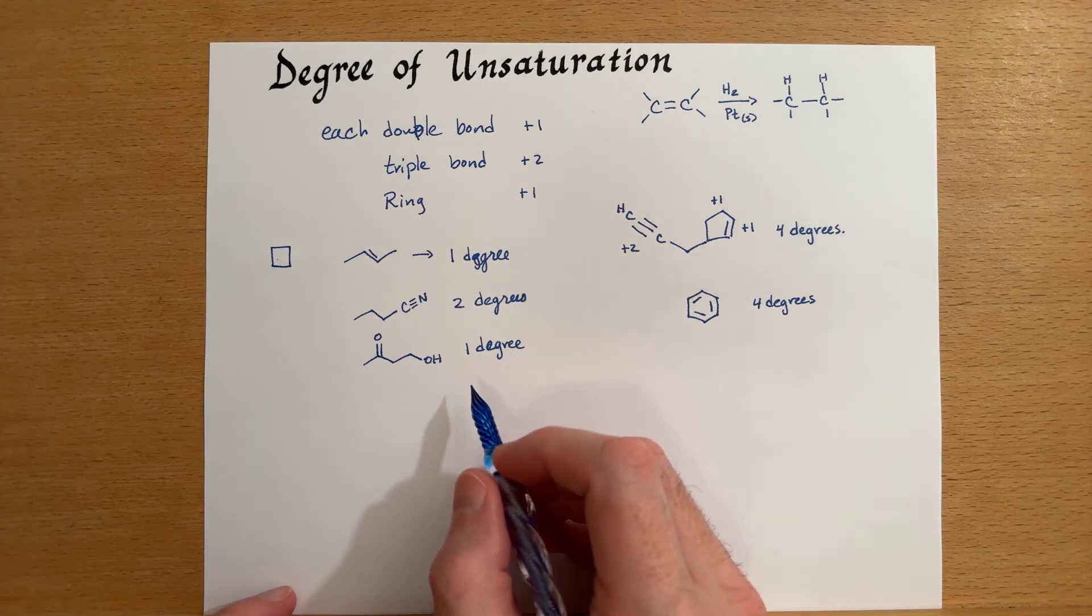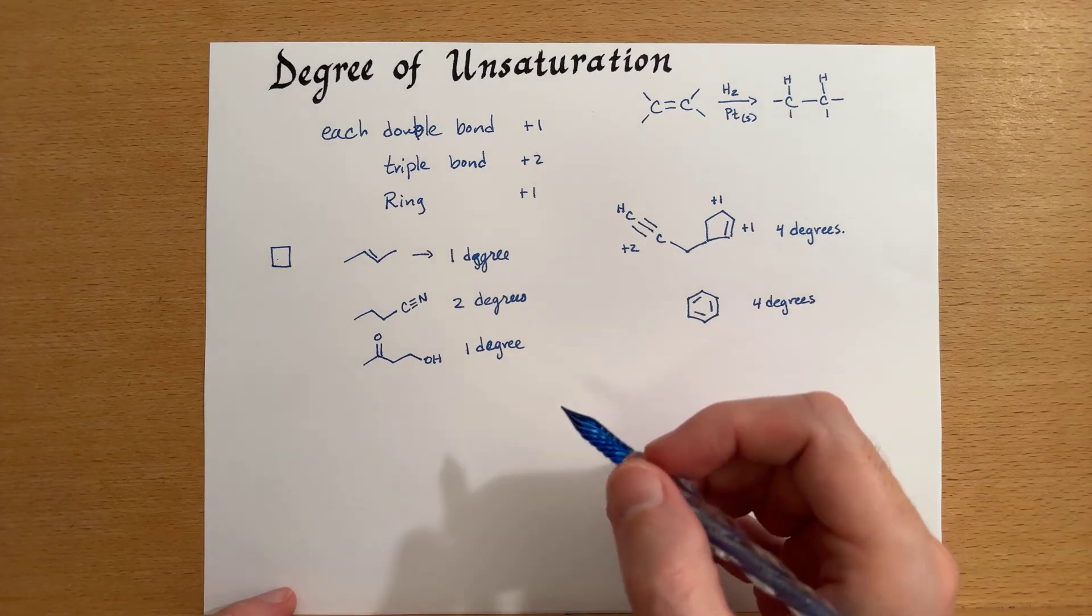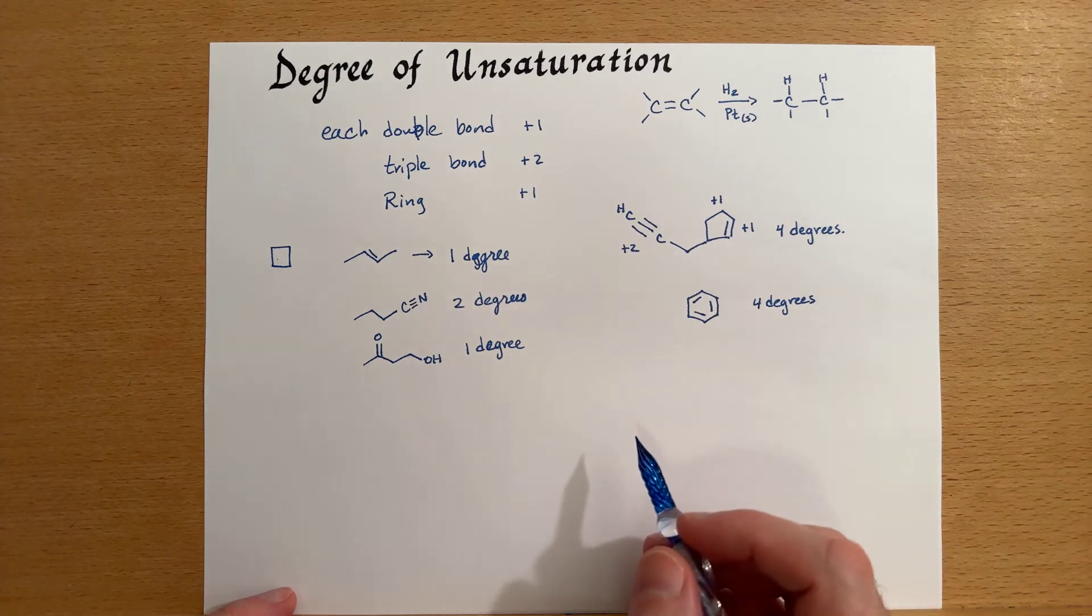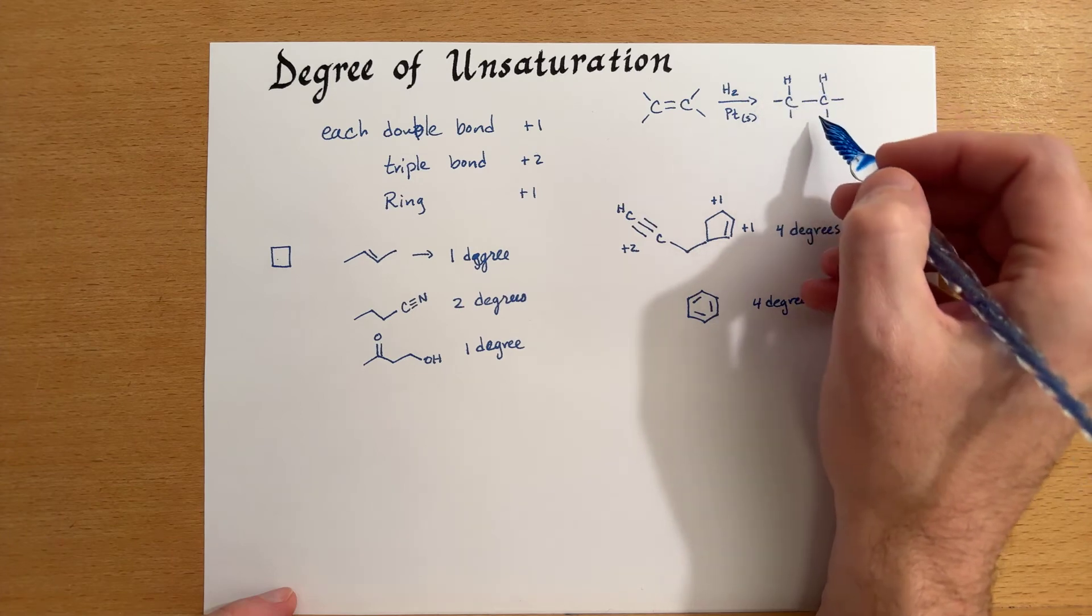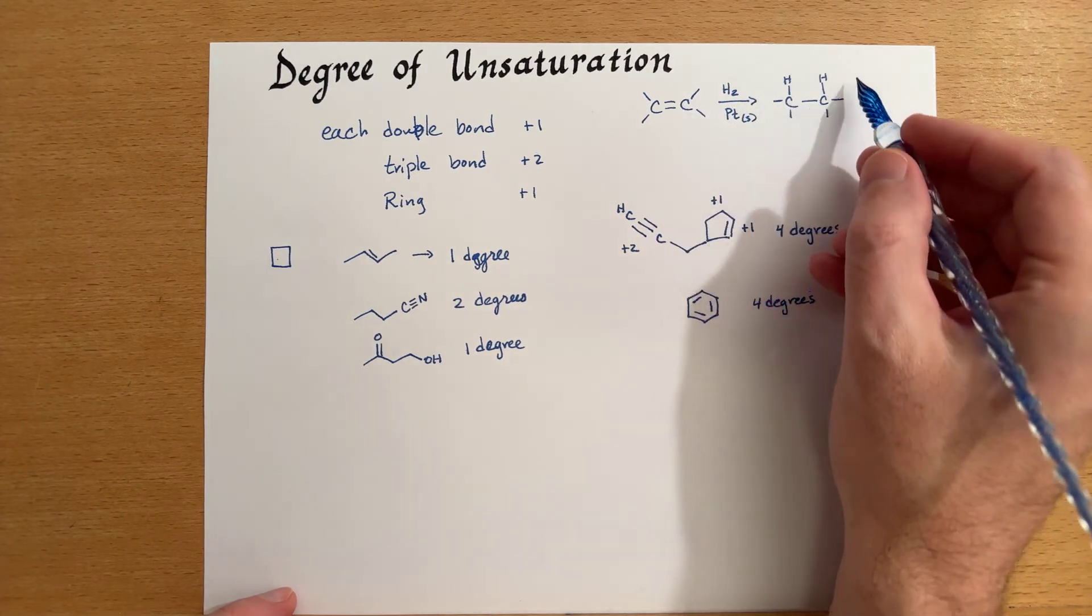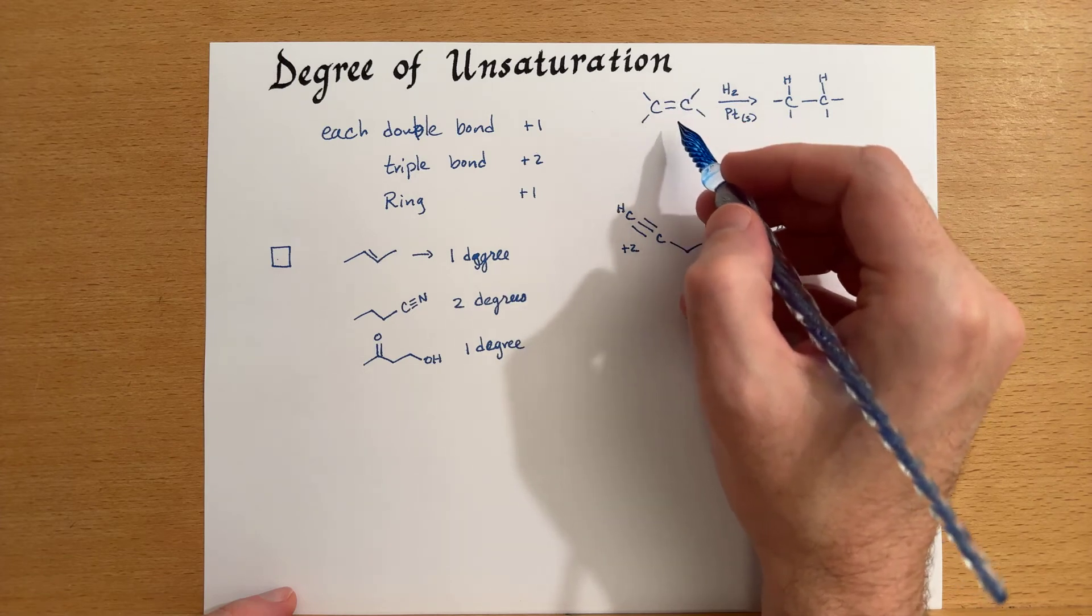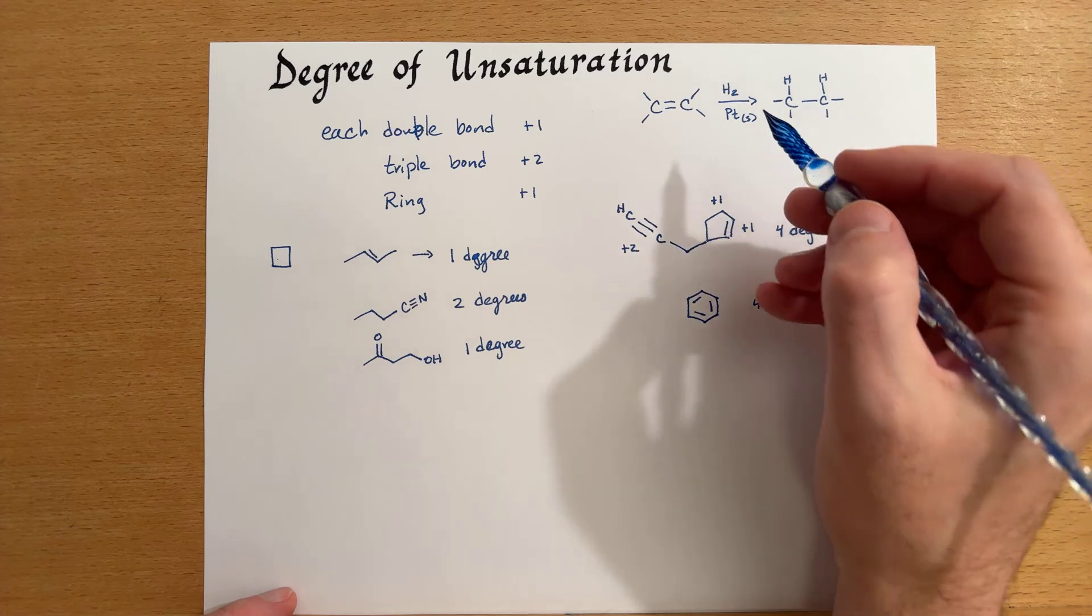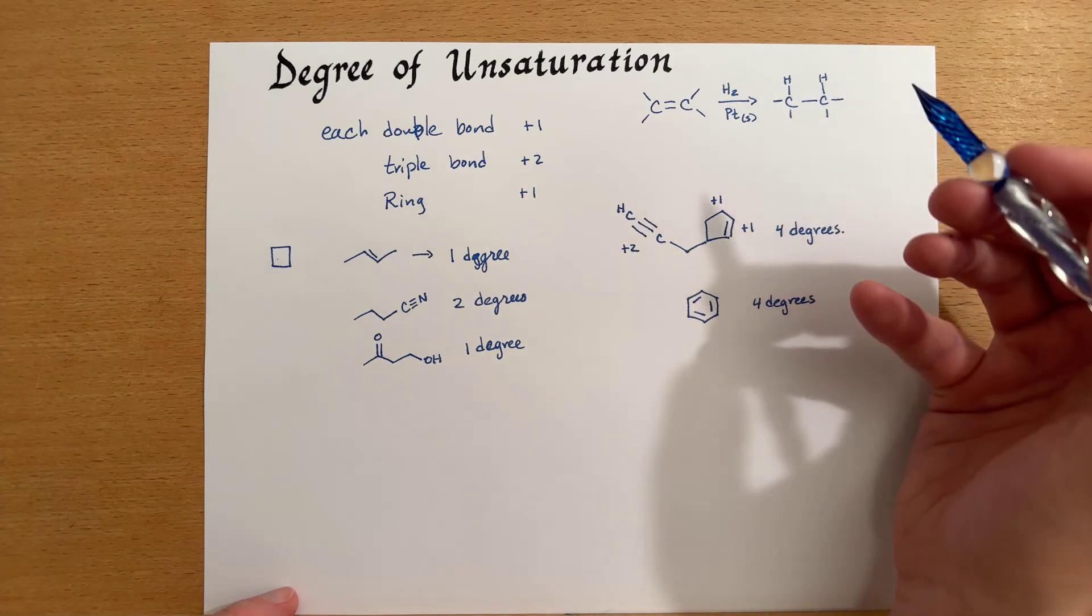So there are other molecules which would be fully saturated, and so then the degree of unsaturation would be zero. Like in the example up here where we've taken and saturated the molecule, we've taken it from one degree of unsaturation down to no degrees of unsaturation. That's also a significant piece of information to see.